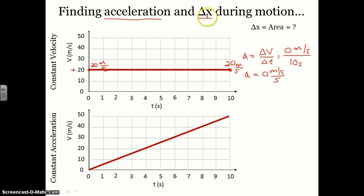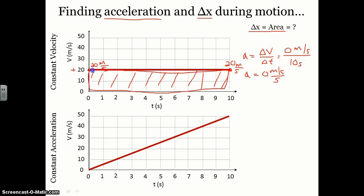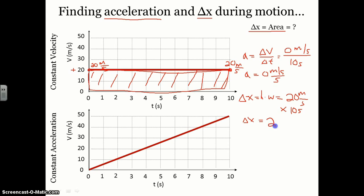If we want to find the displacement — how far something travels and in what direction — when we look at a velocity versus time graph, the displacement is equal to the area between the velocity line and zero. If we shade in this area between the line and zero, that tells us our displacement. This shape is rectangular, so we find the area of the rectangle: height times width. Here we have a height of 20 meters per second multiplied by a width of 10 seconds, giving us a displacement of 200 meters.